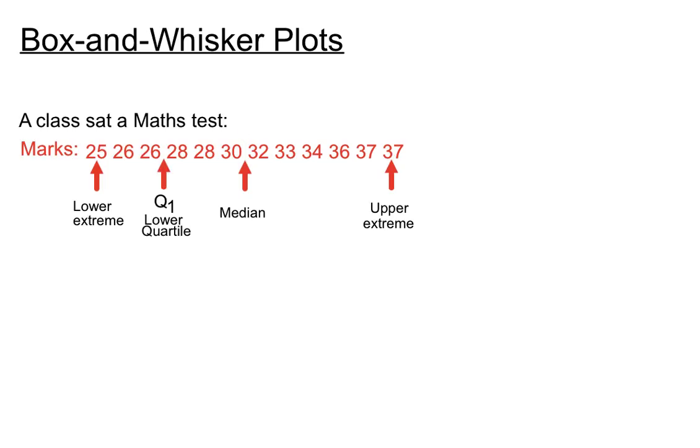Once we split the scores into six to the left of the median and six to the right, it won't make us work too hard to find the lower quartile. It will be halfway between the third score and the fourth score. That's going to be 27. If we added 26 and 28 and divided by 2, we'd get a Q1 of 27.